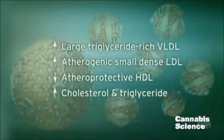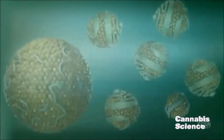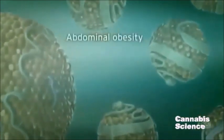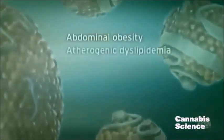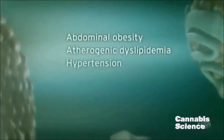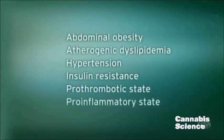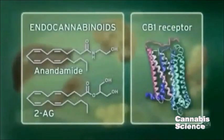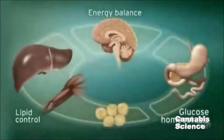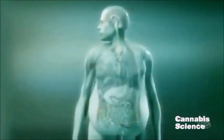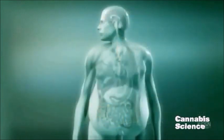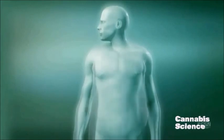Metabolic dysregulation leads to a constellation of symptoms including abdominal obesity, atherogenic dyslipidemia, hypertension, insulin resistance, prothrombotic state, and pro-inflammatory state. As basic and clinical research progresses, we will continue to increase our understanding of the central and peripheral endocannabinoid system and its role in the regulation of metabolic function.